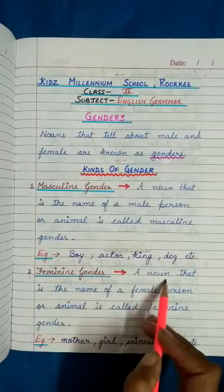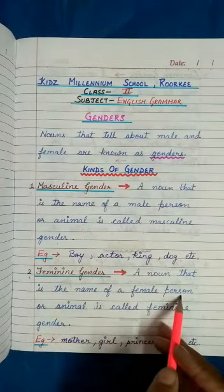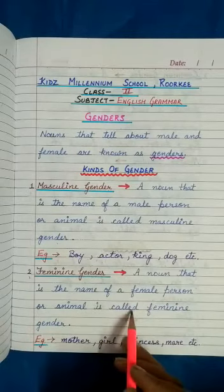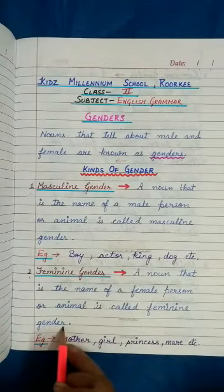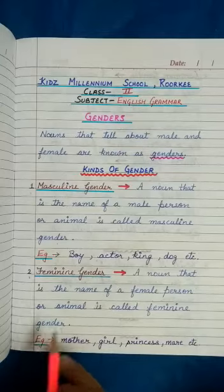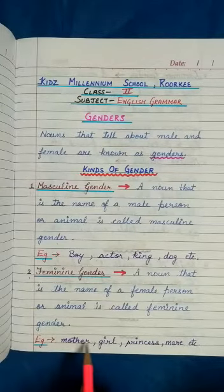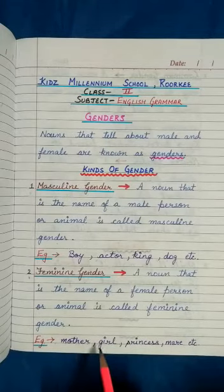A noun that is the name of a female person or animal is called feminine gender. एक noun जो की नाम होता है किसी female person या animal का, उसे feminine gender कहते हैं. Example: mother, girl, princess, mare, etc. ये कुछ examples हैं feminine gender के.